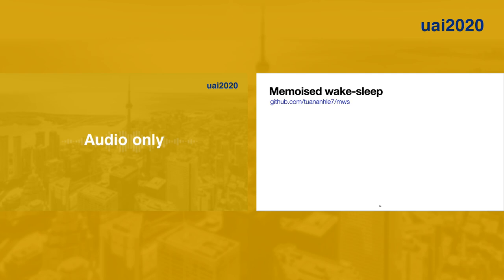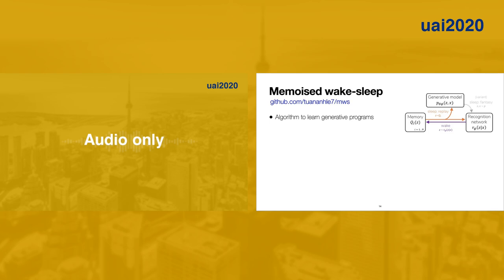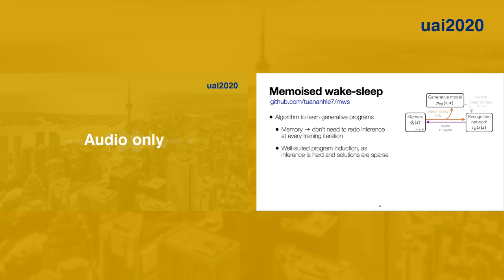In summary, we developed memoized wake sleep for learning generative models with discrete latent variables, focusing on models we call generative programs — generative models where we specify the high-level causal structure and learn the rest using neural networks. The key idea is maintaining a memory of latent variables seen during training, which doesn't rely on a high-quality recognition model from the start. This is well-suited for program induction, as inference is very hard and solutions are often sparse. Memoized wake sleep outperforms competitor algorithms on tasks like Omniglot character recognition, text concept recognition, and cellular automaton image extrapolation.